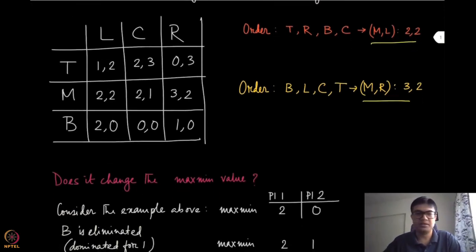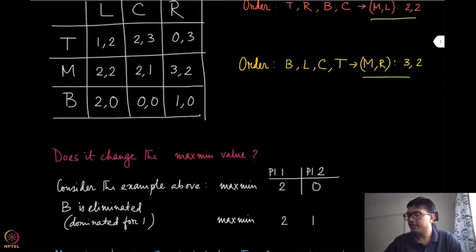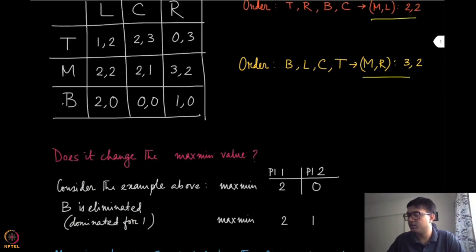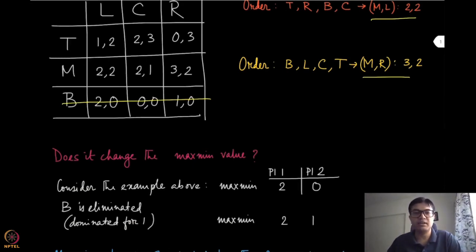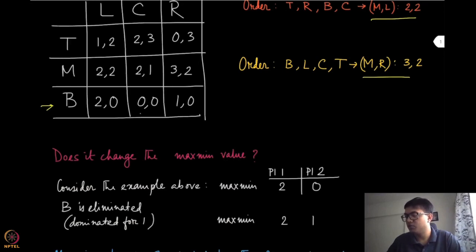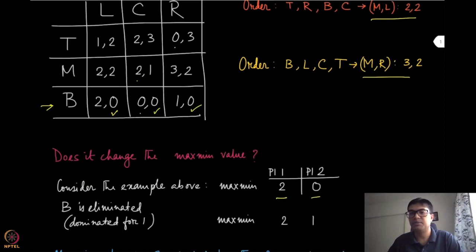Let us look at one example for player one. We find that strategy b is a weakly dominated strategy for player one because m weakly dominates it. Before removing strategy b, what was the maximin value for player one? For each row, the minima were: zero, two, and zero respectively. So the maximin value was 2 for player one. Similarly, for the columns, the minimum values for player two were such that the maximum of the minimum value was zero — so the maximin value for player two was zero.